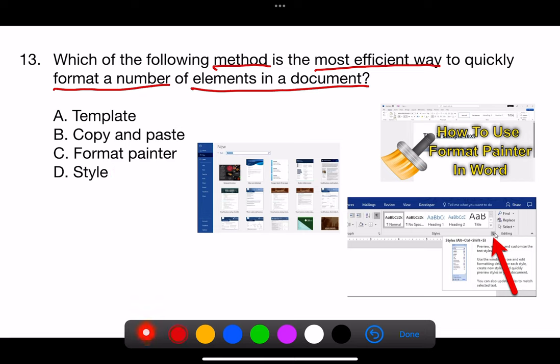The correct answer is D. Style. Using styles is the most efficient way to quickly format a number of elements in a document consistently. Styles allow you to define a set of formatting attributes once and then apply them to any part of your document with a single click.